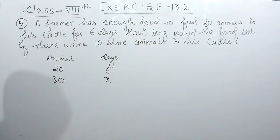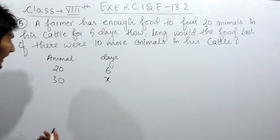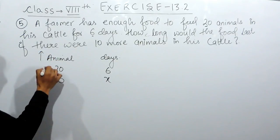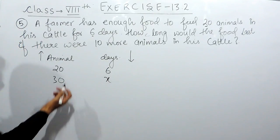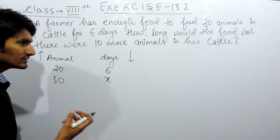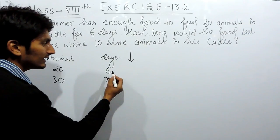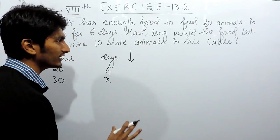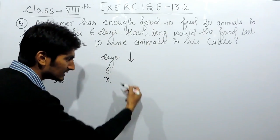You have to check whether this question is of direct proportion or inverse proportion. In inverse proportion, when we increase one value, the second value decreases. When I have some animals and some food to feed them for some days, if I have more animals, clearly the number of days the food will last will be less because the food is constant. When the animals are increasing, the number of days the food lasts is decreasing.